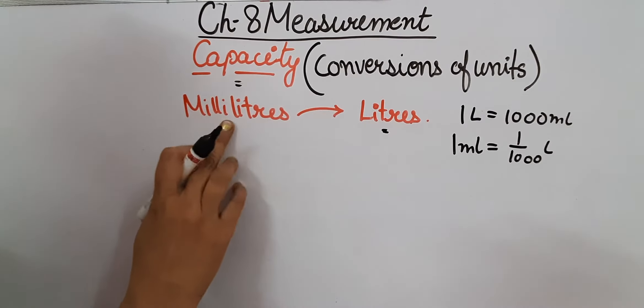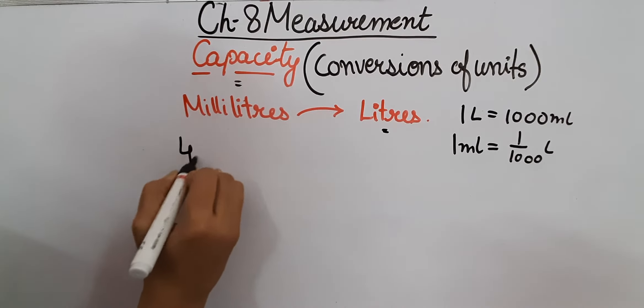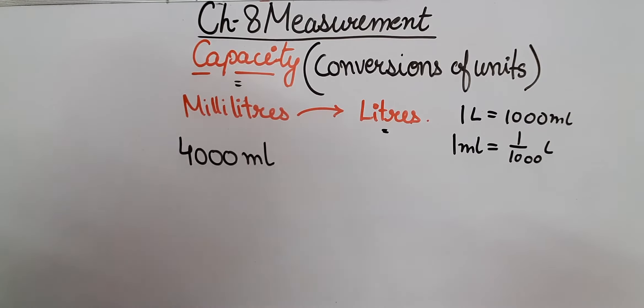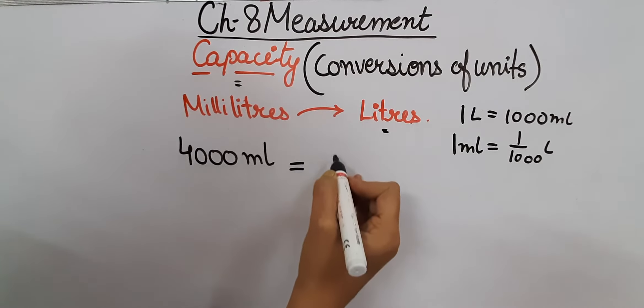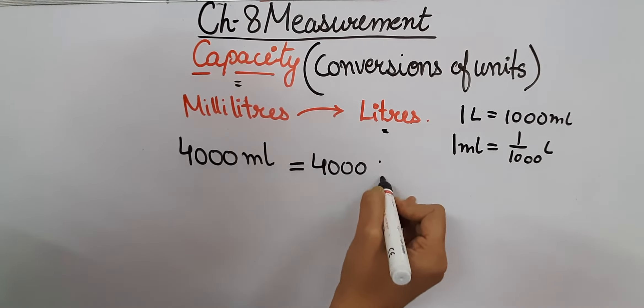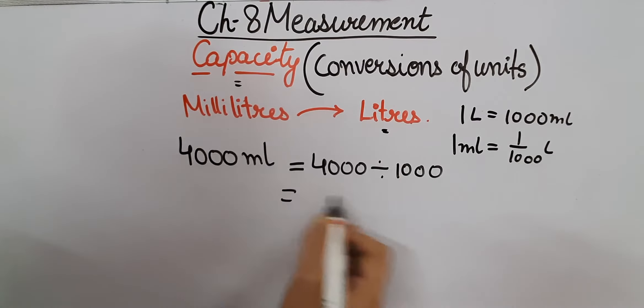So when we are converting milliliter into liters, for example 4000 milliliters, we will divide this 4000 by 1000. So you can write it as 4000 divided by 1000. So 1000 into 4000, it will be 4 liters.